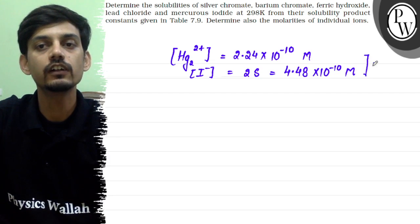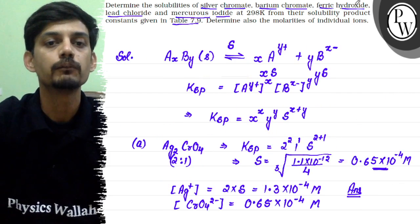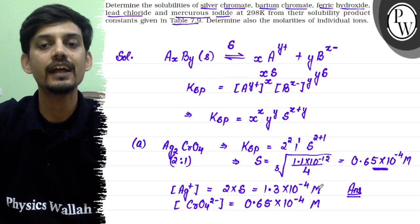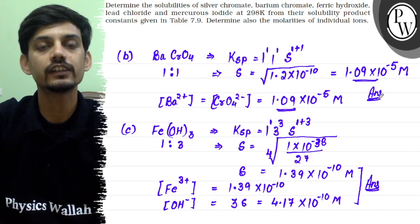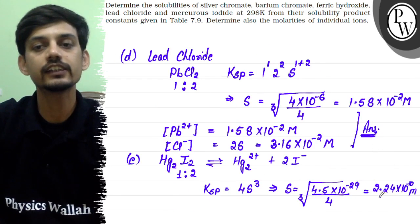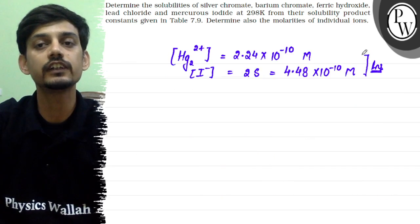These are the answers for all five salts. To summarize: the solubility and individual ion concentrations for silver chromate, barium chromate, ferric hydroxide, lead chloride, and mercurous iodide have been calculated. Hope this clears the question. Best of luck.